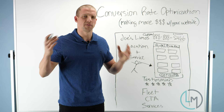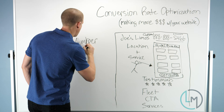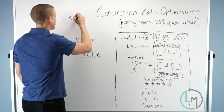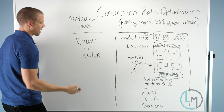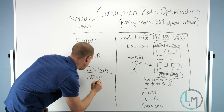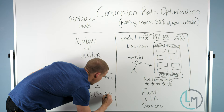Conversion rate is just a number — it's the number of leads divided by the number of visitors. So let's say a page gets 25 leads for every 100 visitors — that equals a 25% conversion rate.